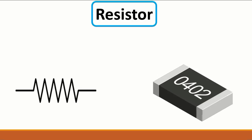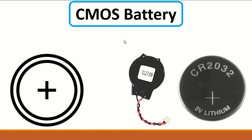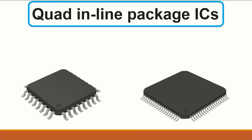The resistor was covered in part one. The diode has a cathode and an anode — it allows current to pass in only one direction, from anode to cathode, and is also used for protection. The CMOS battery, or Complementary Metal Oxide Semiconductor battery, is used in computers. Always use part number CR2032 for computers — do not use other codes.